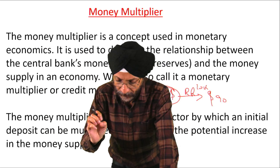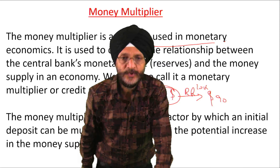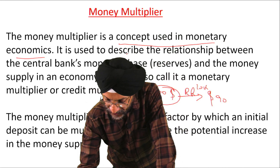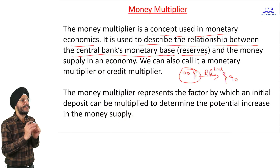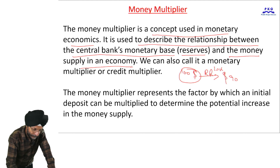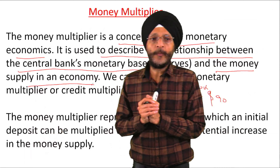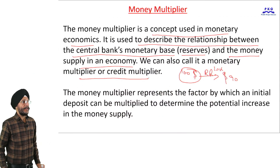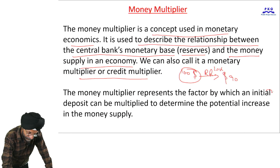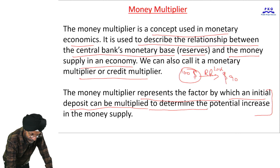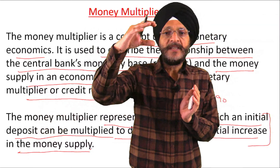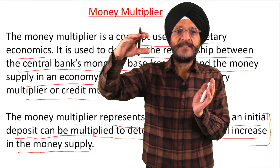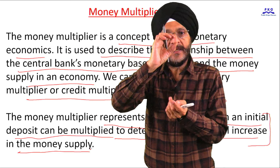Now we will concentrate on the meaning of money multiplier. It is a concept used in monetary economics. Money multiplier is used to describe the relationship between the central bank's monetary base, i.e. reserves, and the money supply in an economy. Money multiplier is also known as monetary multiplier or credit multiplier. The money multiplier represents the factor by which an initial deposit can be multiplied to determine the potential increase in the money supply — that is, how many times the money supply increases on the basis of the initial deposit.